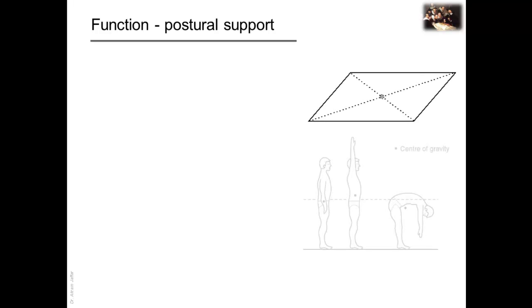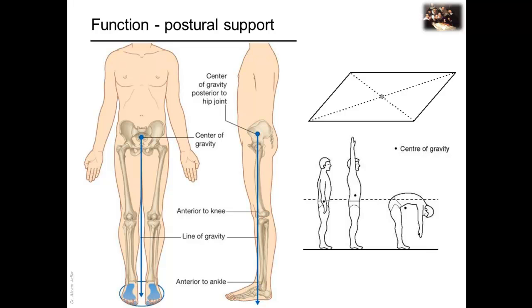Returning back to the function of the lower limb, a major function of the lower limb is to support the weight of the body with minimal expenditure of energy, that is, with minimal use of muscles, because muscles spend most of the energy. First of all, a point should be clarified about the center of gravity. The center of gravity is the point where the mass of the body is concentrated.